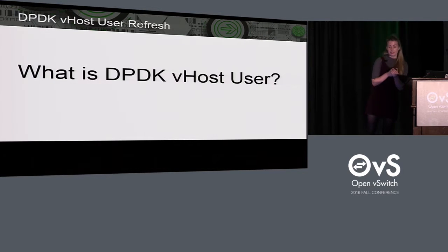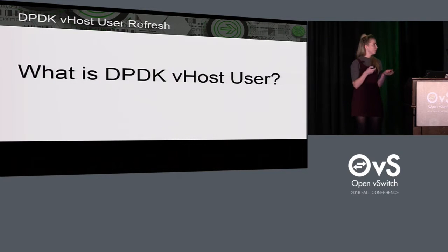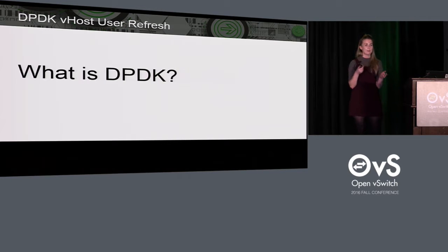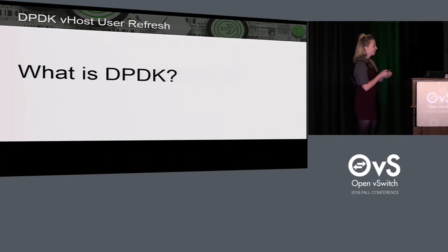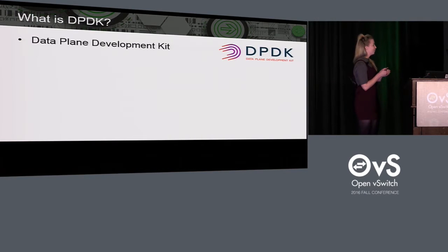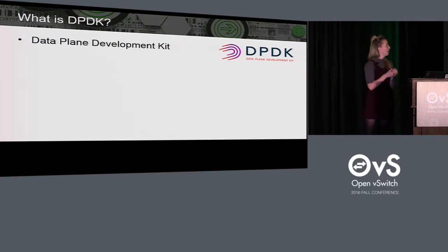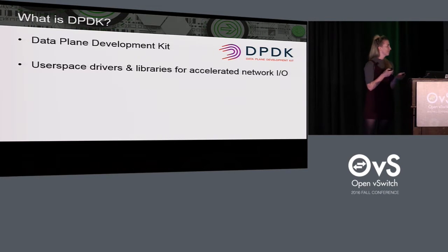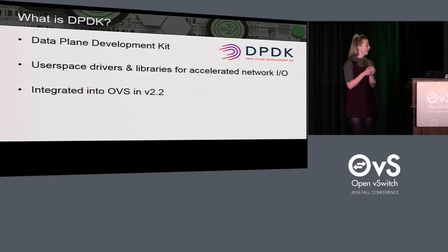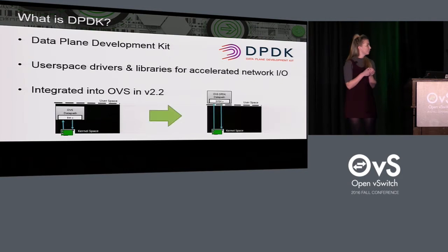A good place to start is with what is DPDK vhost user, or to go a level higher, what is DPDK. Most people here probably know what DPDK is, but it's no harm to touch on the basics. DPDK stands for the Data Plane Development Kit, and it's a set of open source userspace drivers and libraries that accelerate network I/O. It was integrated into OVS in version 2.2, allowing Open vSwitch to be run in user space and take advantage of this accelerated network I/O.